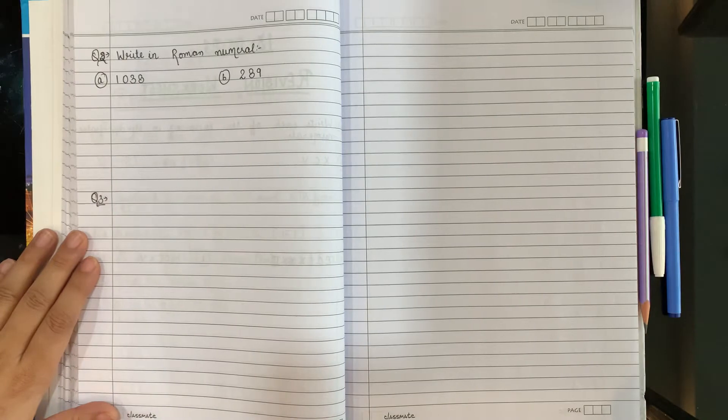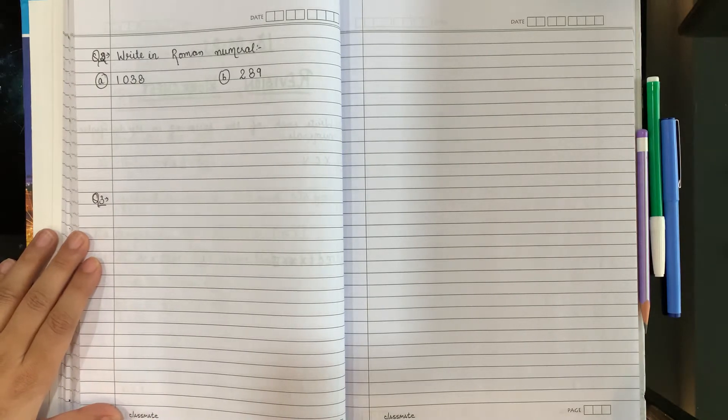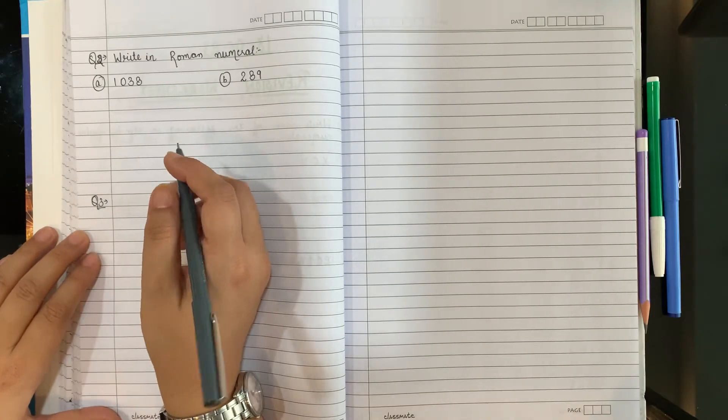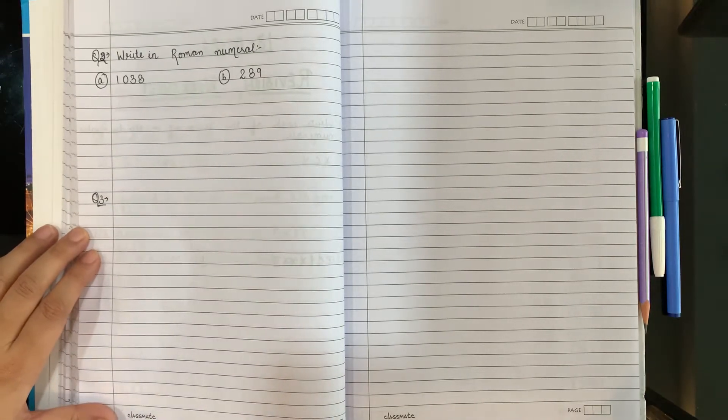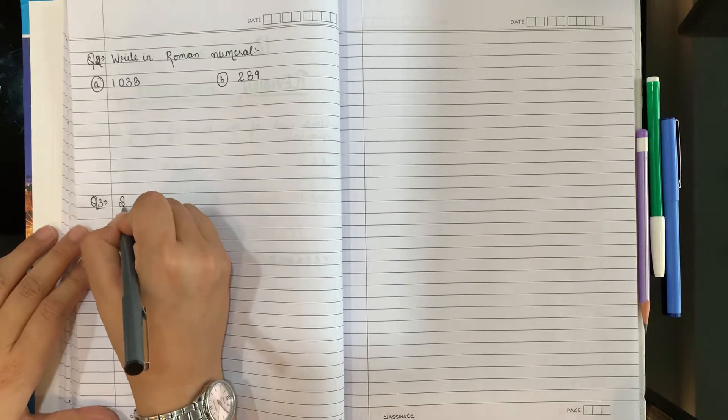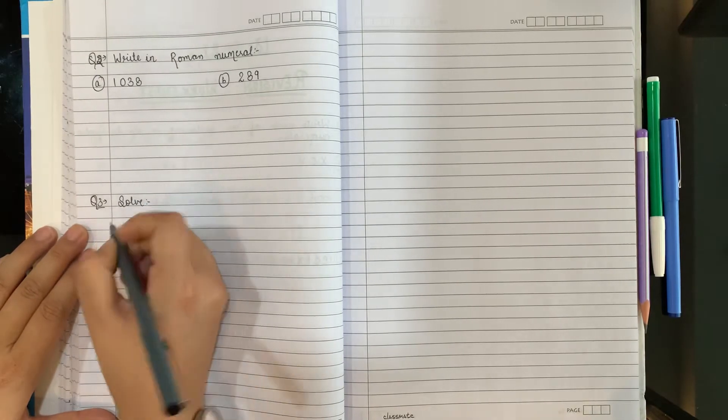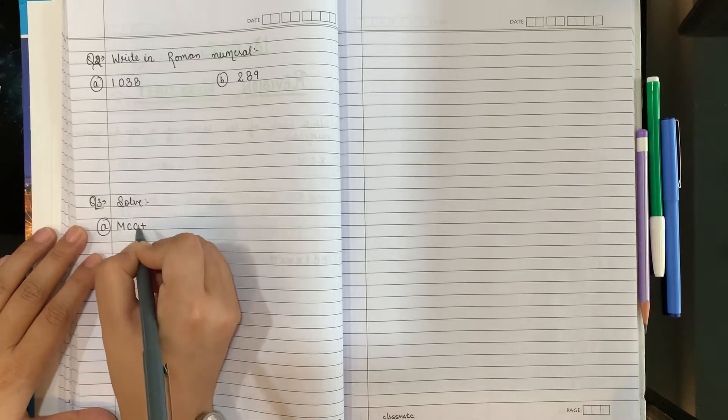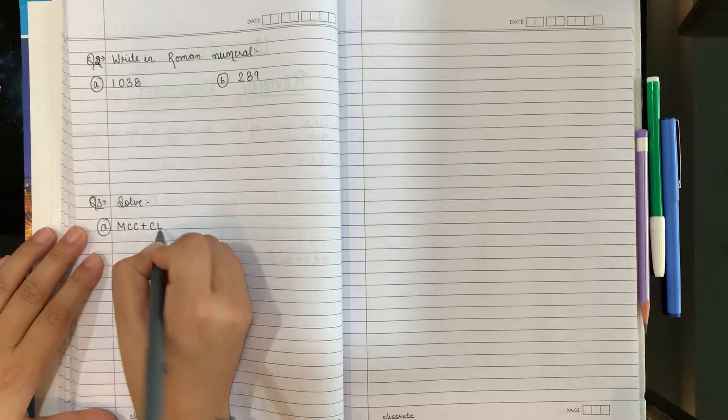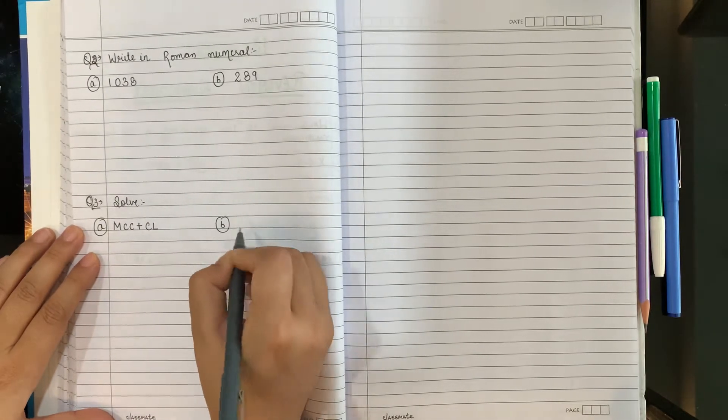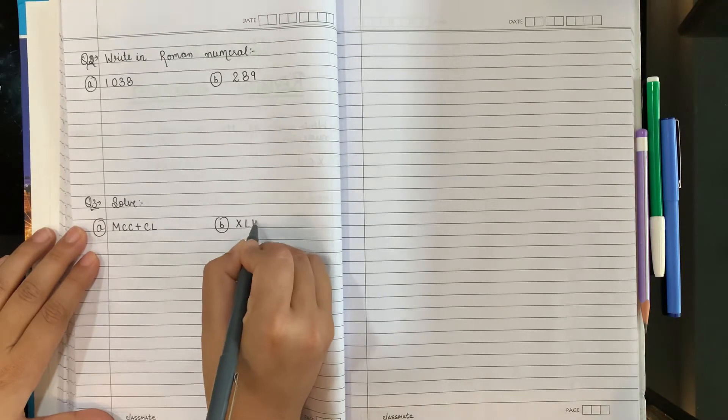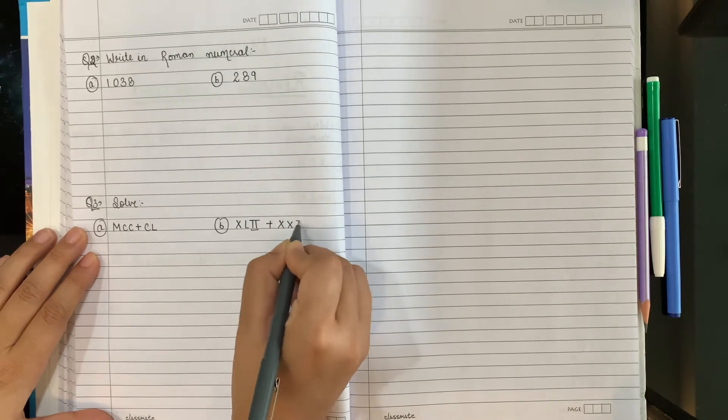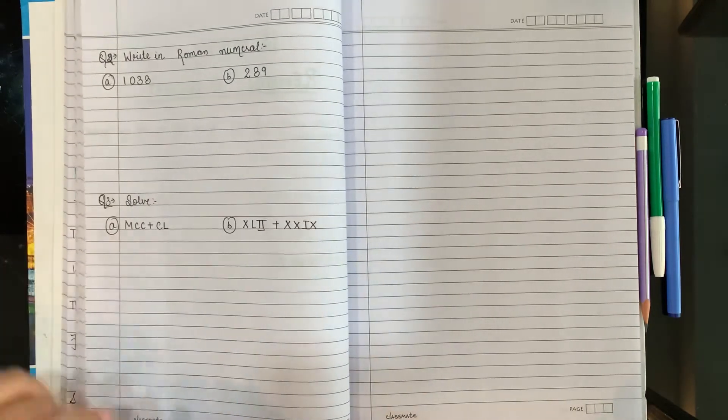Leave space for the answer. Write down question number 3. Very good. Solve. Write down A part, B part: MCCCCL. And B part: XLII plus XXIX.